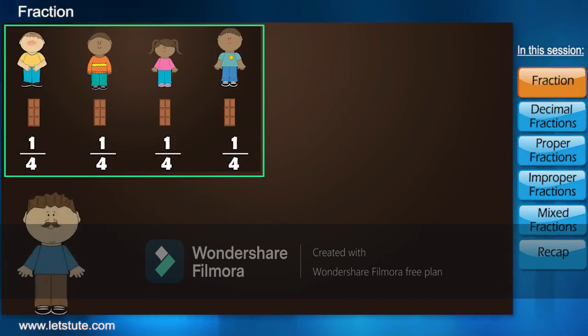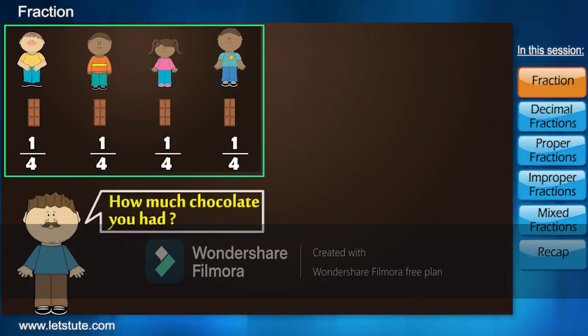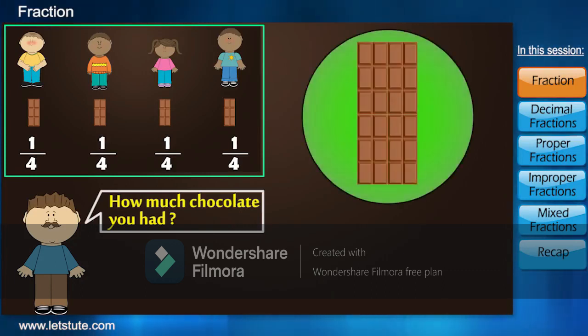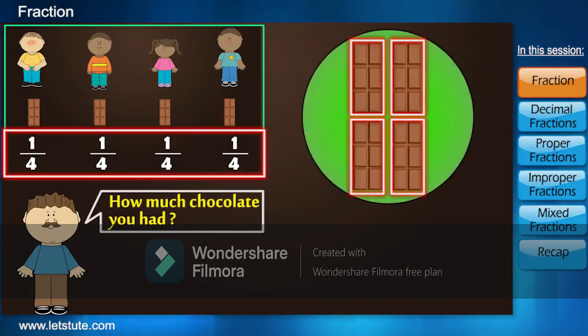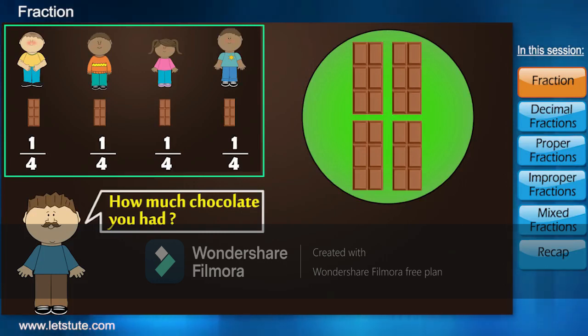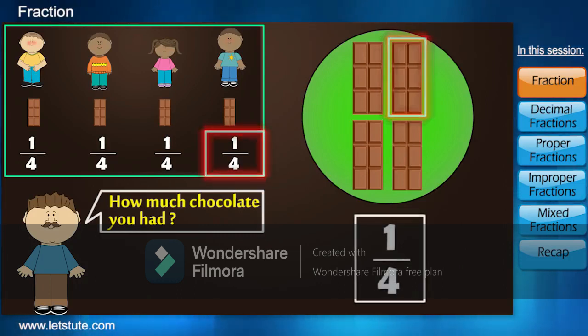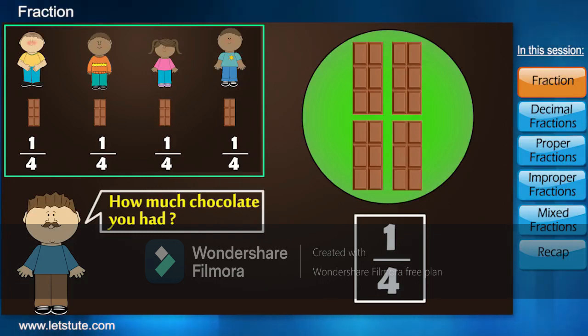Now, suppose your uncle asks you how much chocolate you had. You will not say you had one big chocolate, you divided it into four equal parts and ate one part of it. But now, as you know what fractions are, you will proudly say you ate one fourth part of the chocolate.